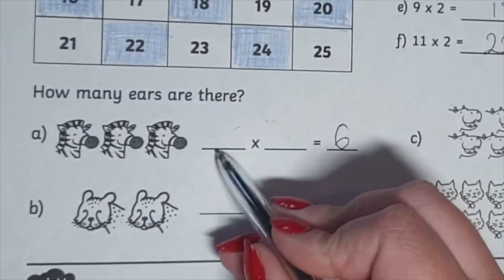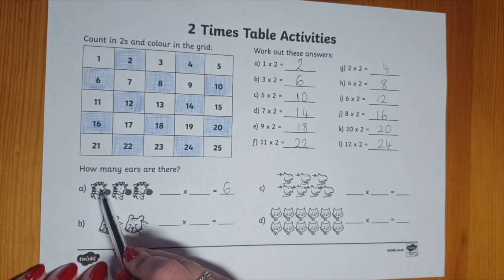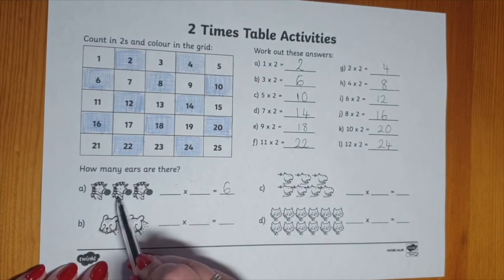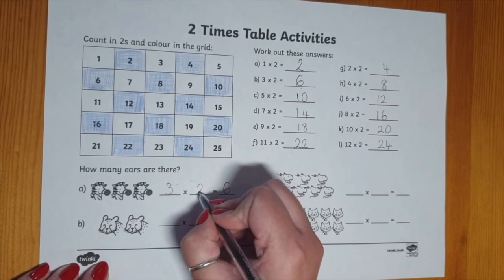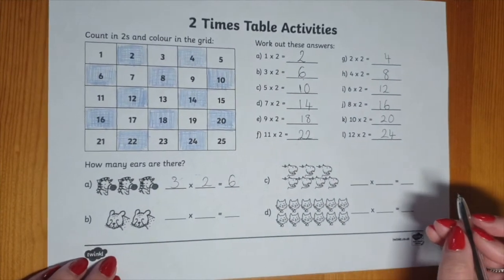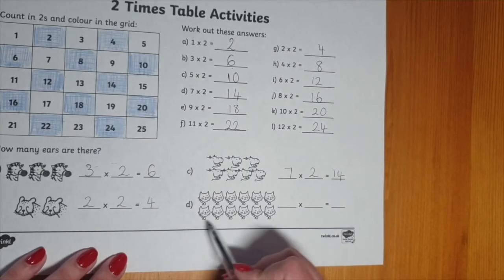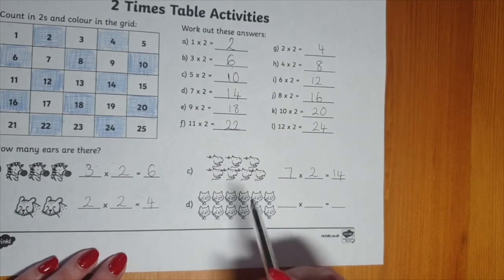Also, what is the multiplication question? So there's two ears on each animal and there's three lots of animals. Three lots of two. Three times two is six. Two ears on each animal. Twelve times two, twenty-four.